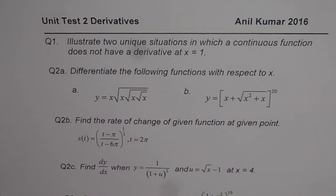So question number 1 here is, illustrate two unique situations in which a continuous function does not have a derivative at x equals to 1.